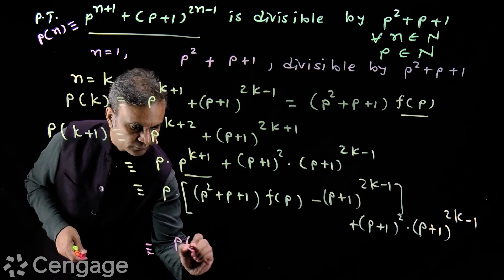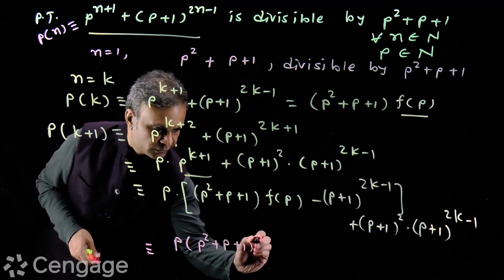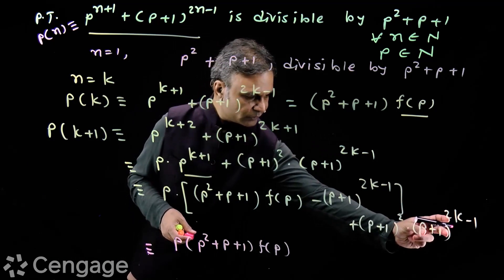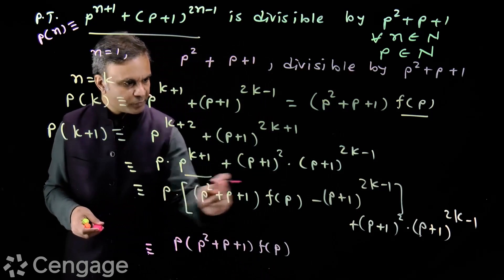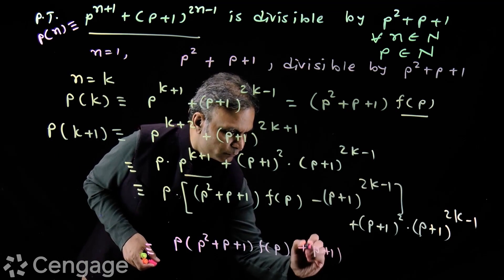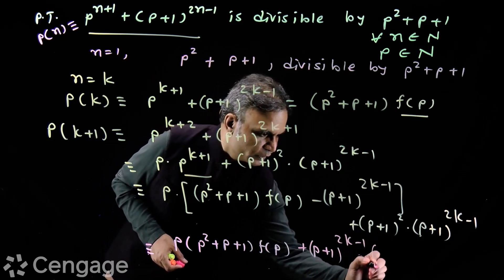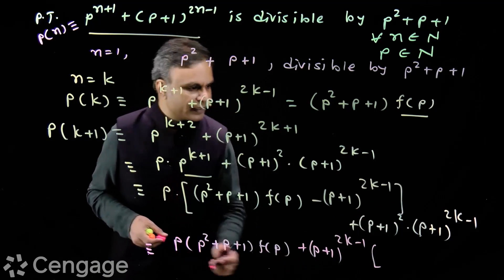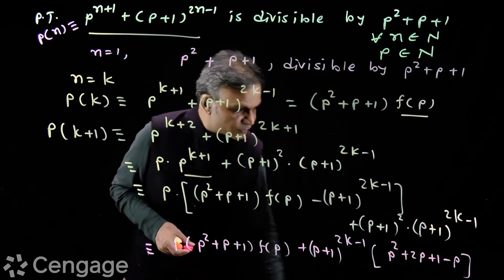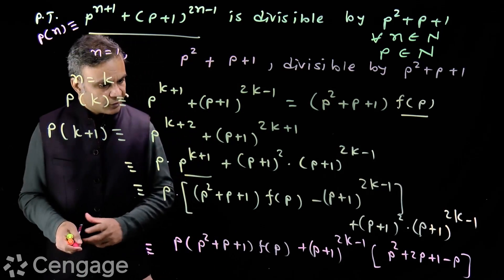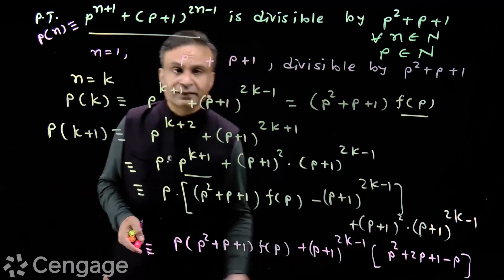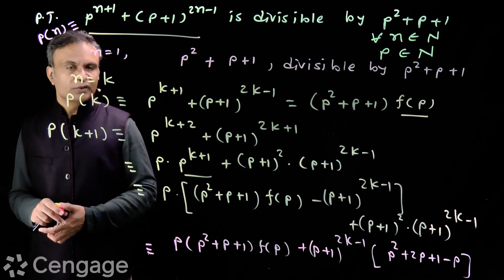We have p × (p²+p+1) × f(p). Then we have (p+1)² × (p+1)^(2k-1), and minus p × (p+1)^(2k-1). So we have (p+1)^(2k-1) as a common factor. Inside the bracket we have (p+1)² − p, which gives p²+2p+1−p. This expression equals p²+p+1. So in both terms we have the factor p²+p+1, and therefore this expression is divisible by p²+p+1.